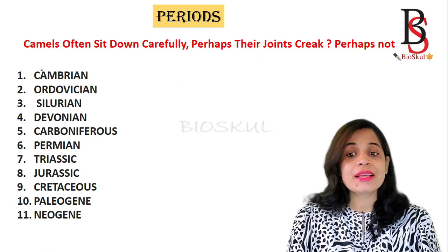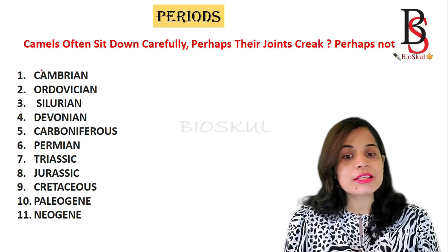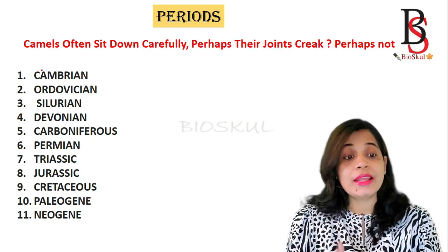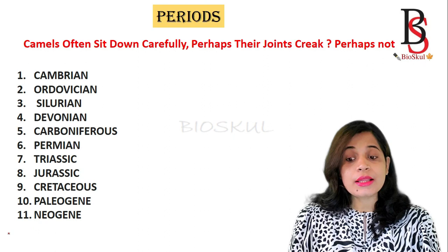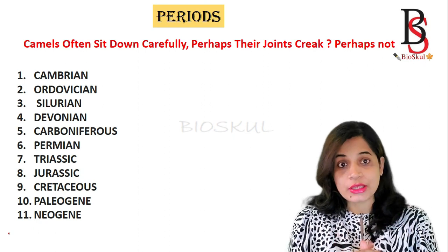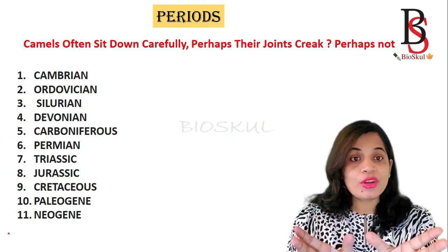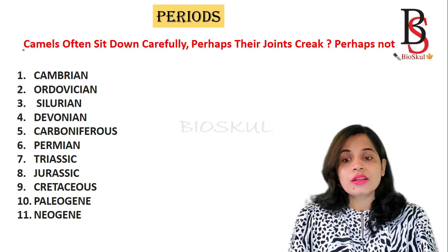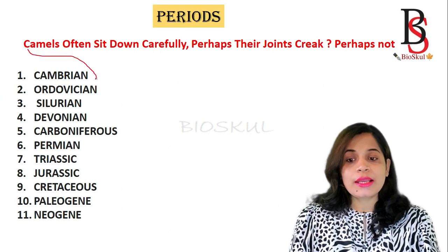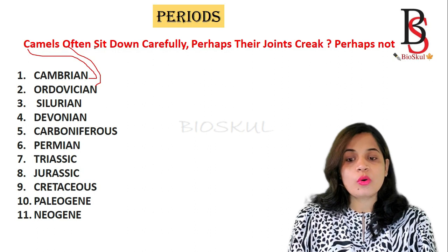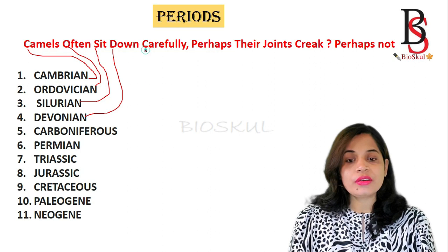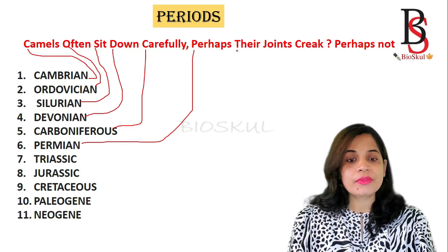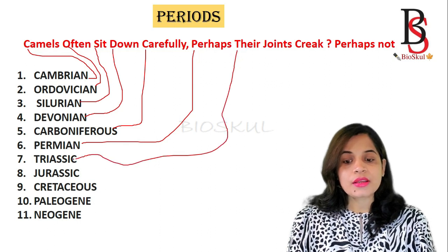Similarly, the periods can be memorized by this mnemonic: 'Camels Often Sit Down Carefully Perhaps Their Joints Creak Perhaps Not.' There are eleven periods and this mnemonic helps us memorize them in sequential order. C is for Cambrian, O for Ordovician, S for Silurian, D for Devonian, C for Carboniferous, P for Permian, T for Triassic.